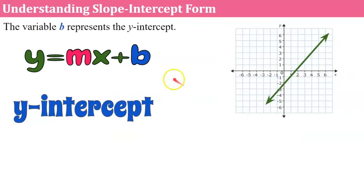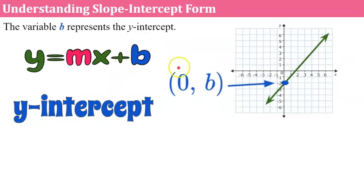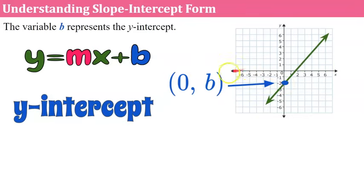Now let's understand the y-intercept. The variable b represents the y-intercept. Our y-intercept is always an ordered pair (0, b), because it's always going to lie on the y-axis, and any point that lies on the y-axis is going to have an x-coordinate of 0. B represents the y-coordinate of the y-intercept. All y-intercepts have an x-coordinate of 0.